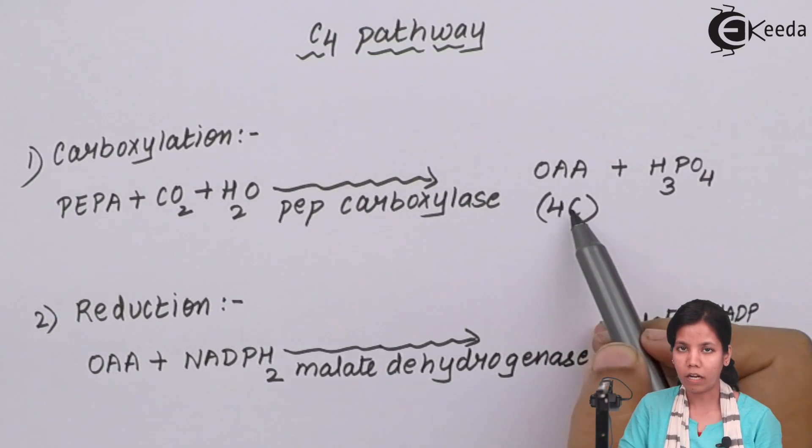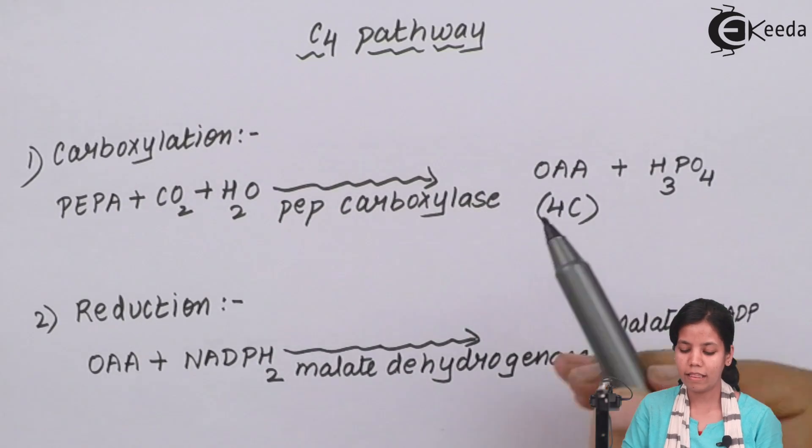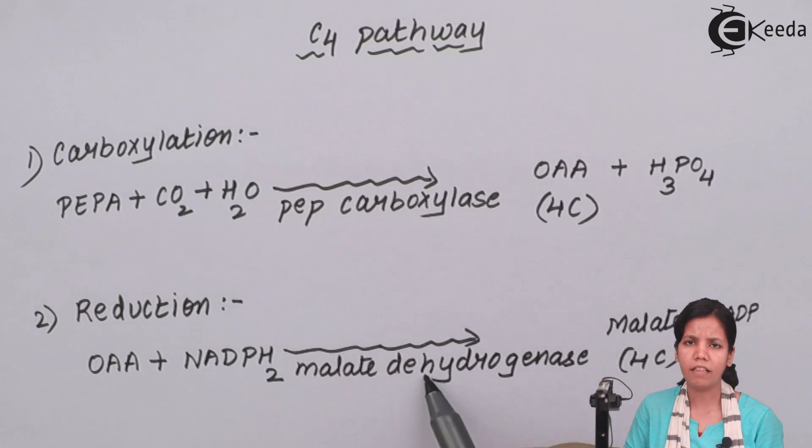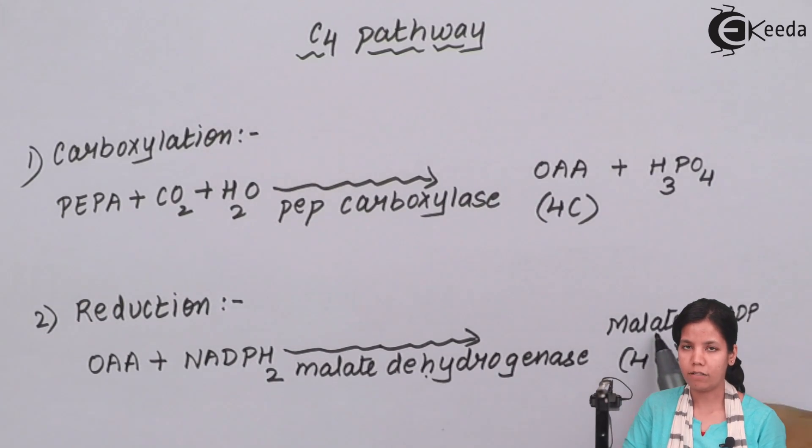Now this stable four carbon compound goes in the next reaction which is reduction of OAA. Now NADPH2 which is nicotine amide adenine dinucleotide phosphate reacts with OAA in the presence of enzyme dehydrogenase, and we all know dehydrogenase enzymes help in the removal of hydrogen molecules in the form of H+ or OH-. Malate is formed and NADPH2 gets reduced to NADP+. Now this malate is again a four carbon compound.